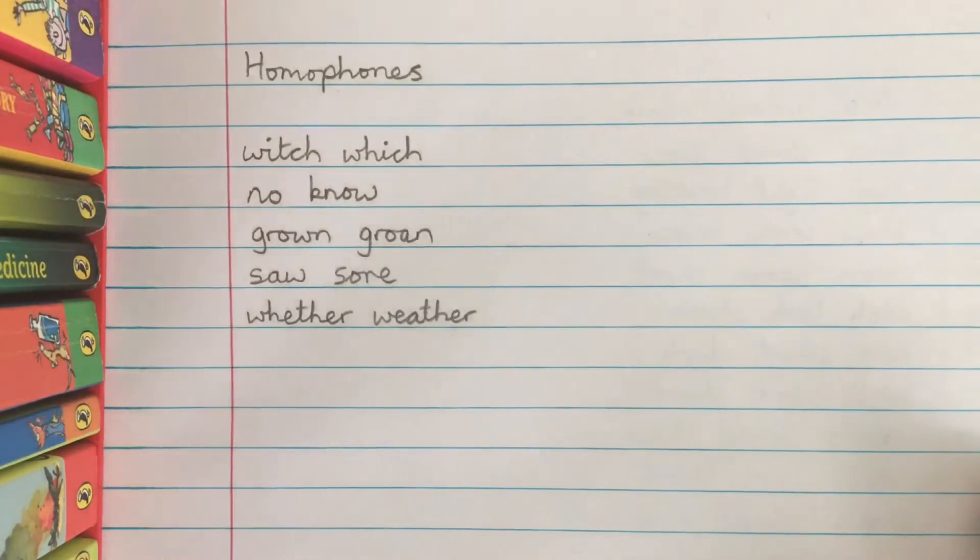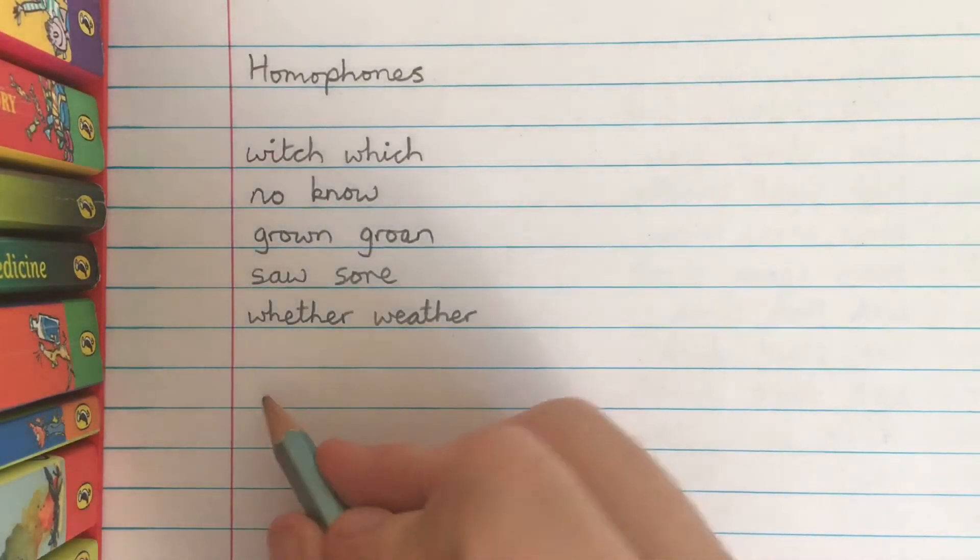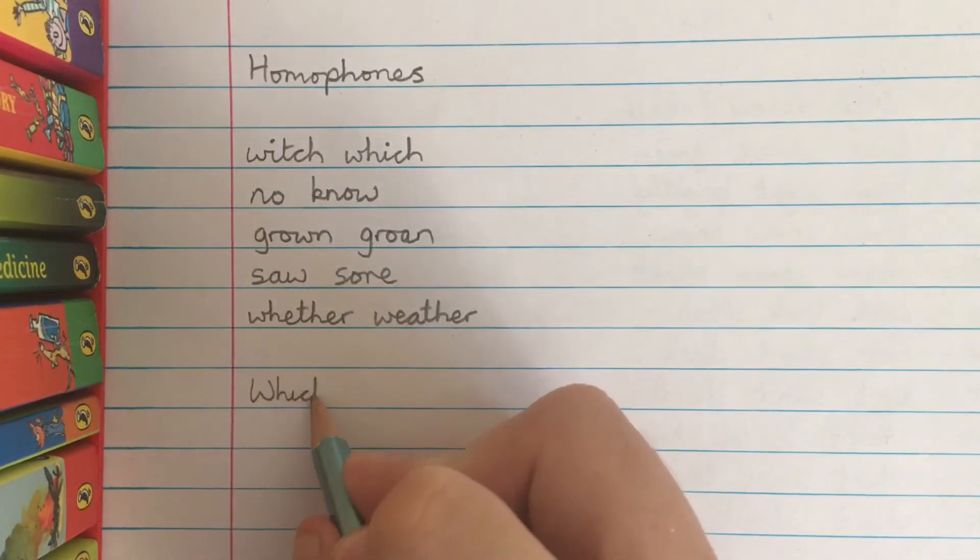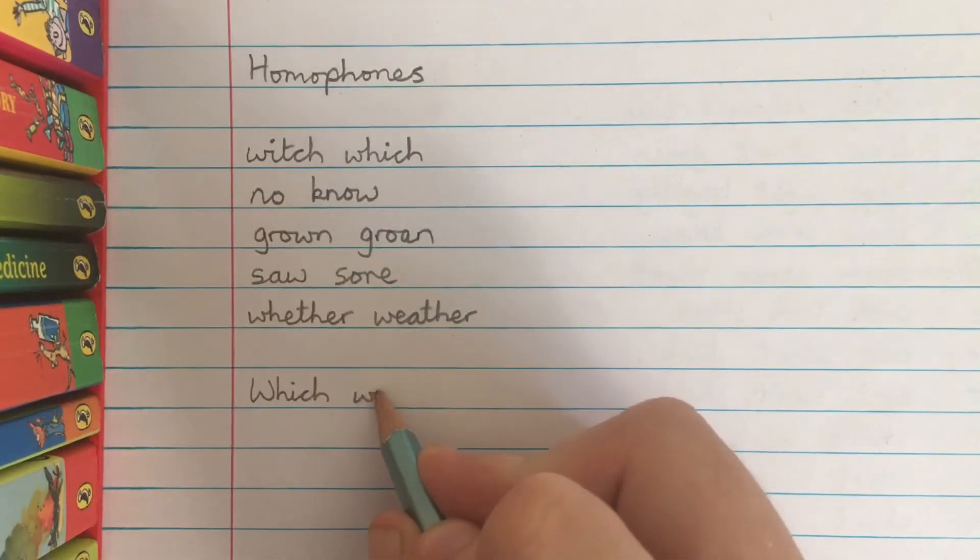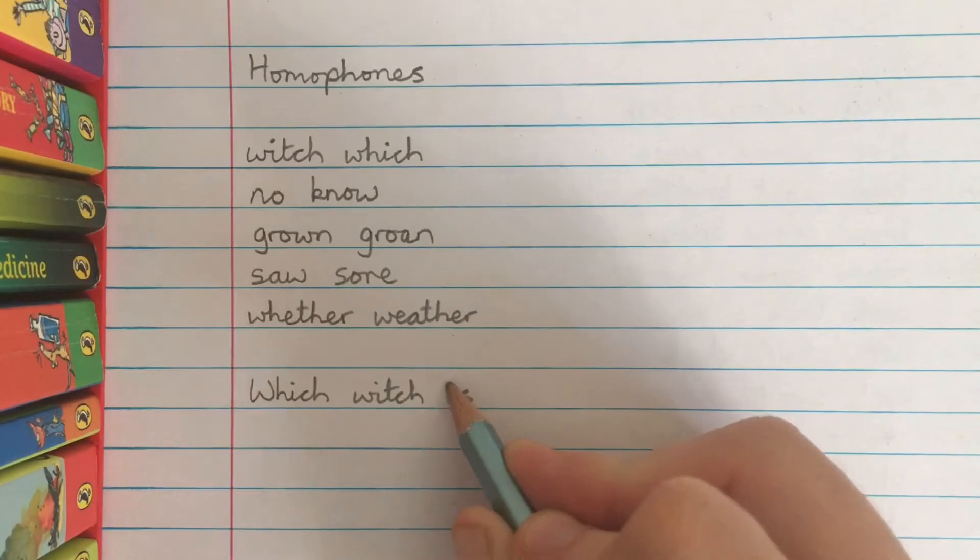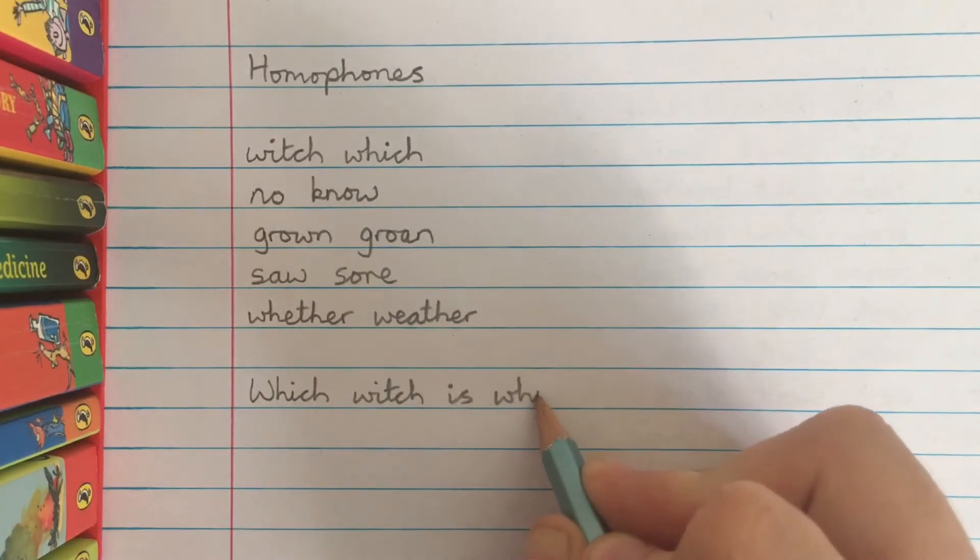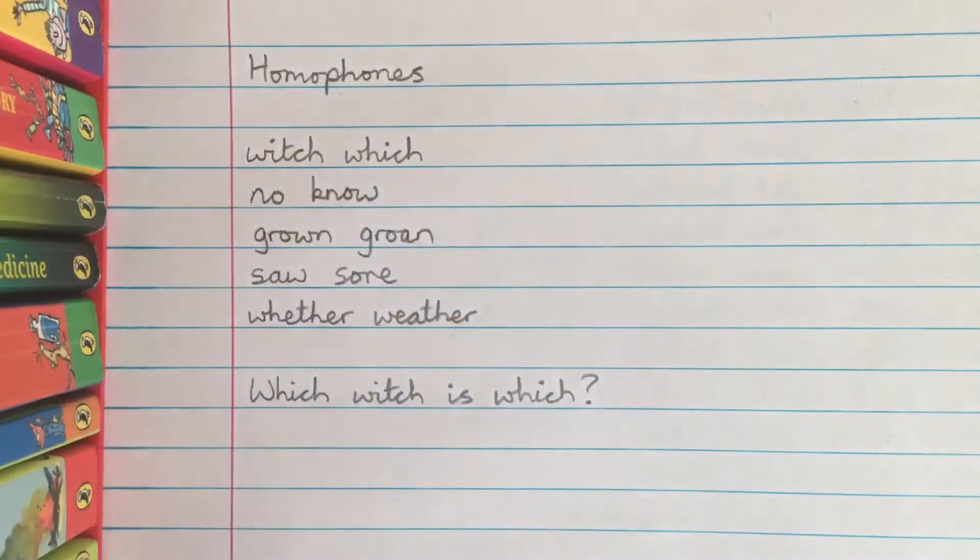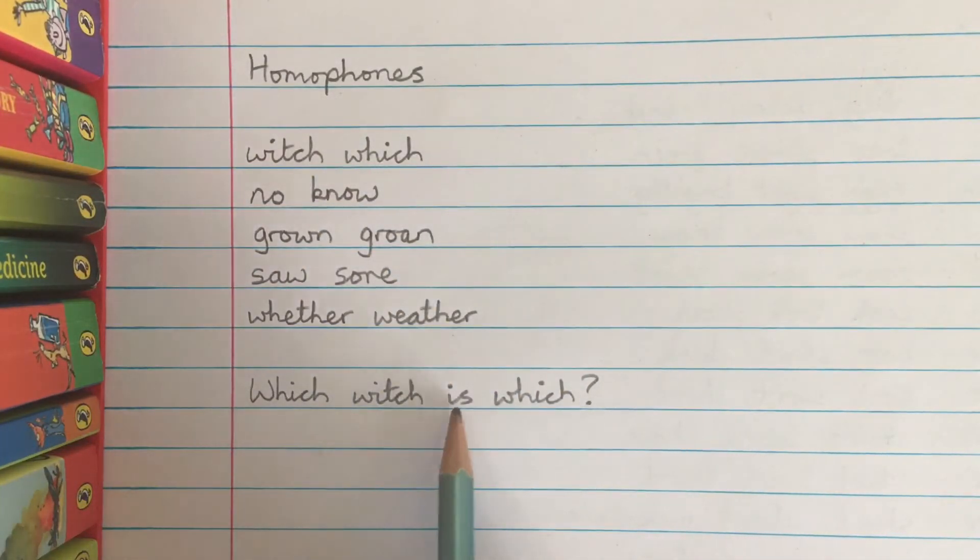So we'll start off with witch and which. Now if you've got your witches muddled up you might ask this question: which witch is which? This one refers to the lady and these ones refer to the choice. Which witch is which? Let's have a go at writing this sentence.